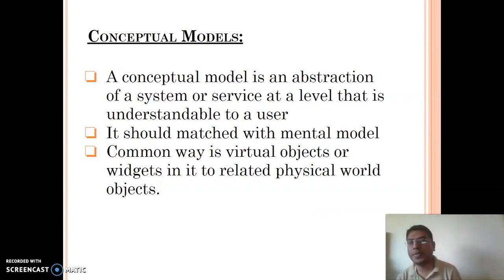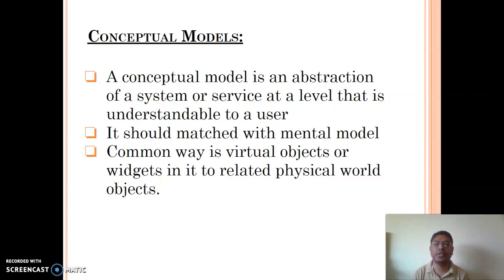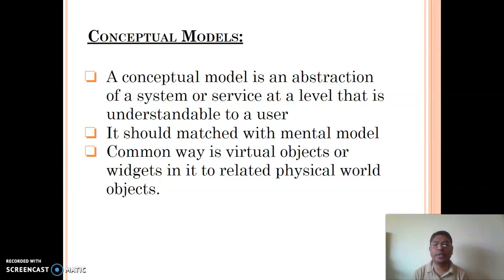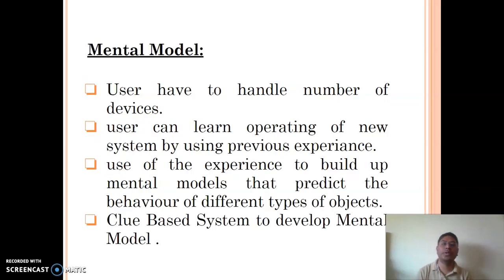There are two types of models through which users can understand a service: the conceptual model and the mental model. The conceptual model is the abstraction of a system or service at a level that is accessible to the user. It contains information about all mandatory and minimum services. The restriction of the conceptual model is that it must be aligned with the mental model.